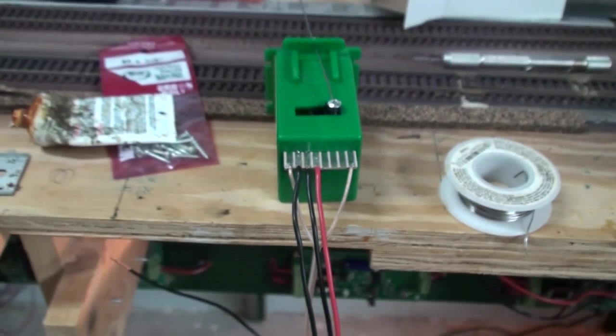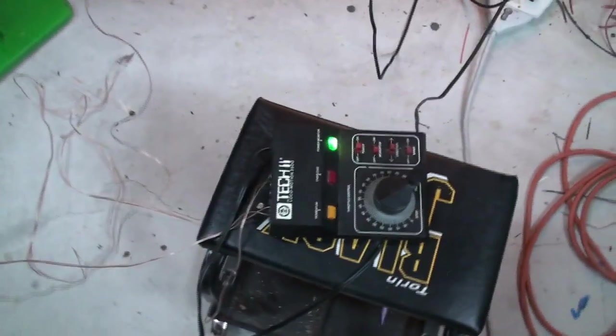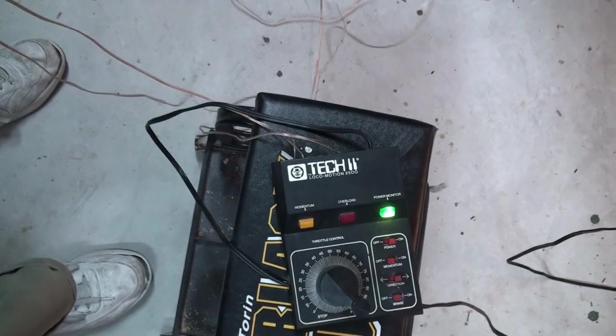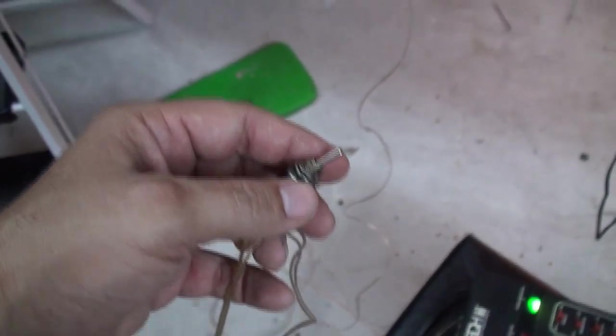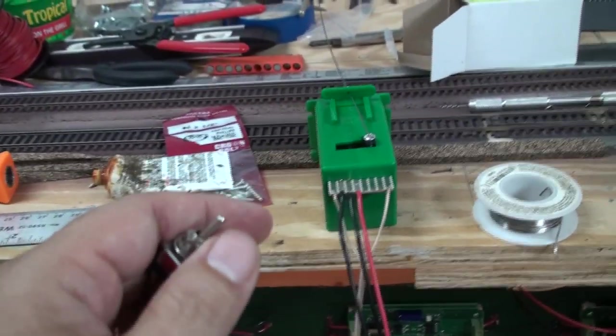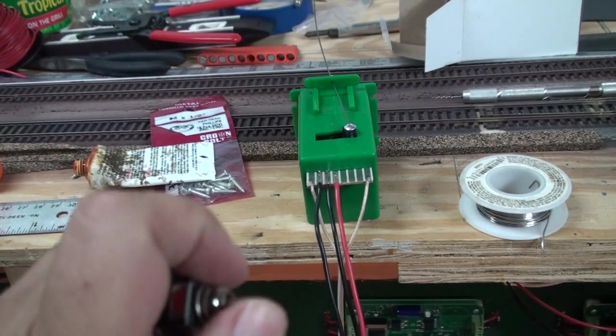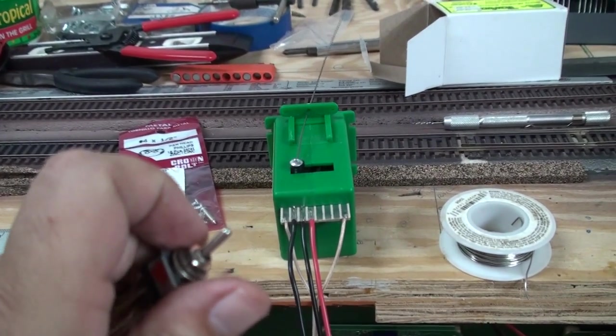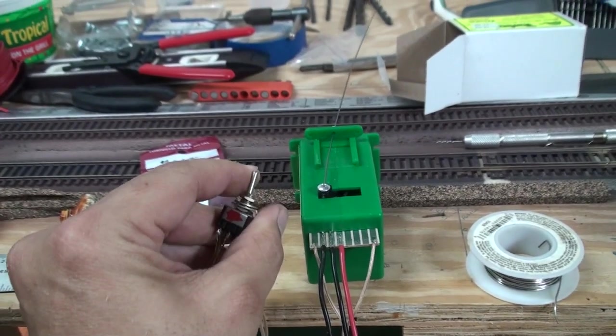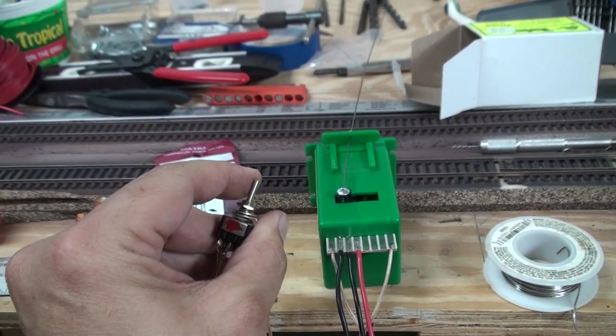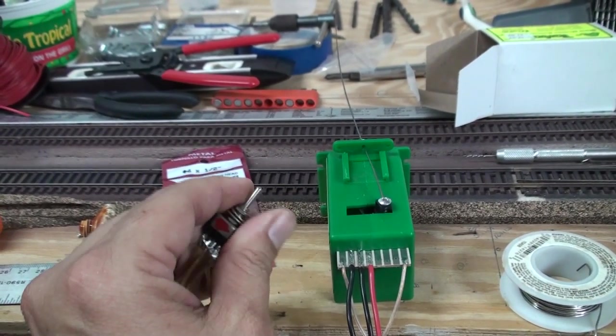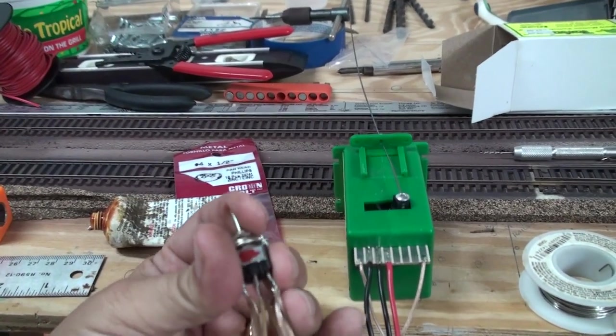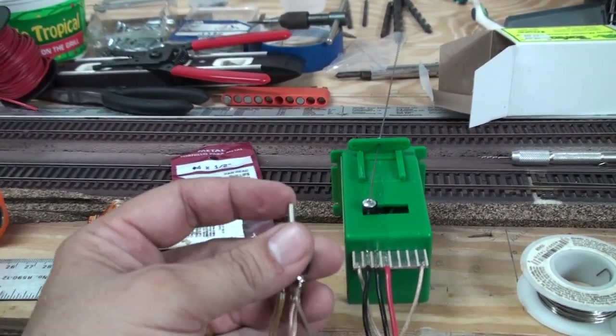Before I mount the switch motor, I will connect it to my trusty 20 year old DC power pack which is already pre-wired with a double pole, double throw switch. And by flipping the switch, I will test the switch motor. Center is off. Voila. Perfect.